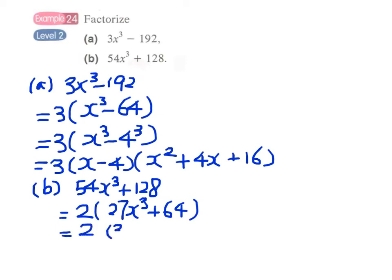Well, this will be the cube of 3x minus the cube of 4. Here we have difference of two cubes and it can be factorized into 3x - 4 times the square of 3x.